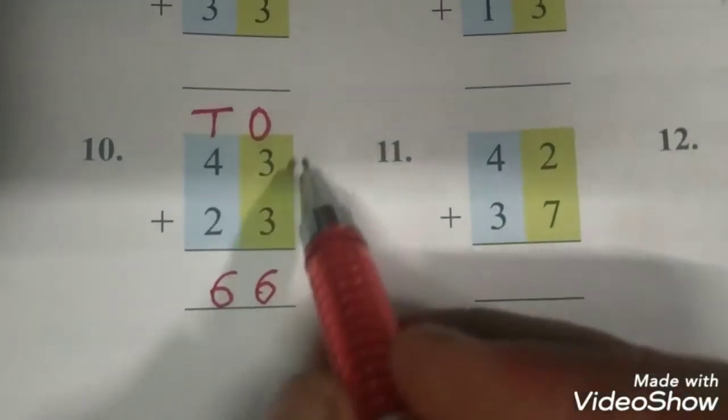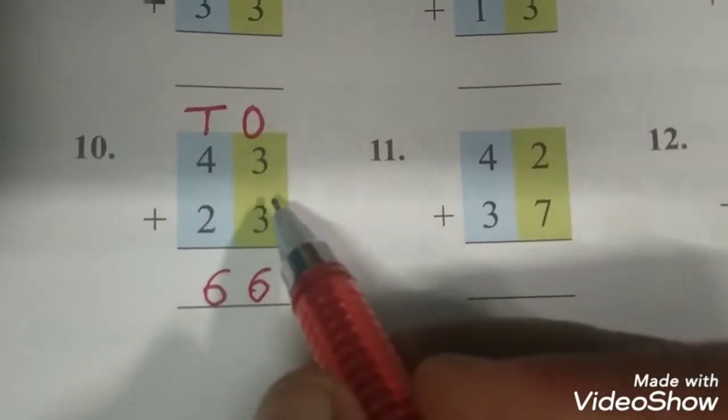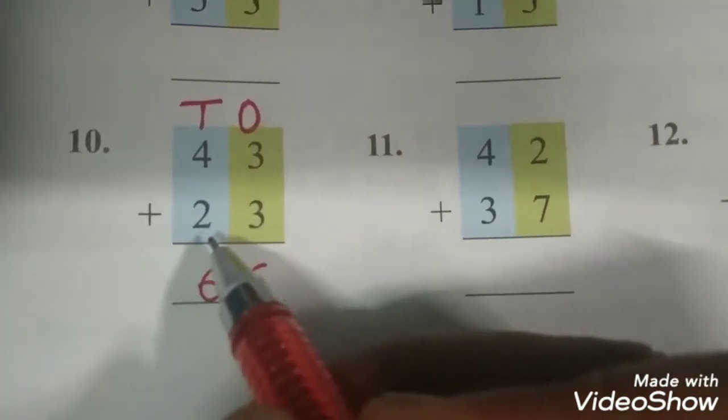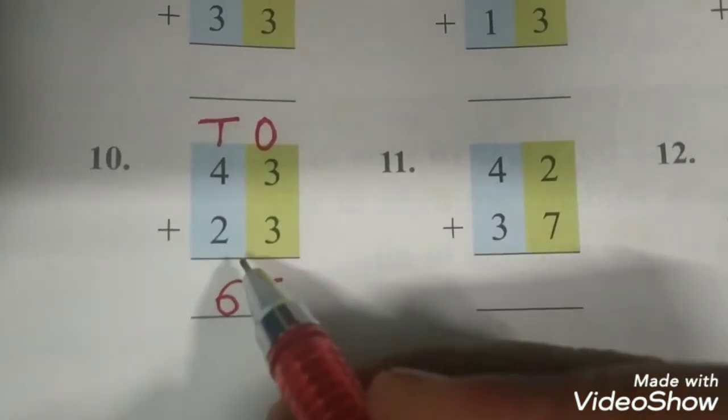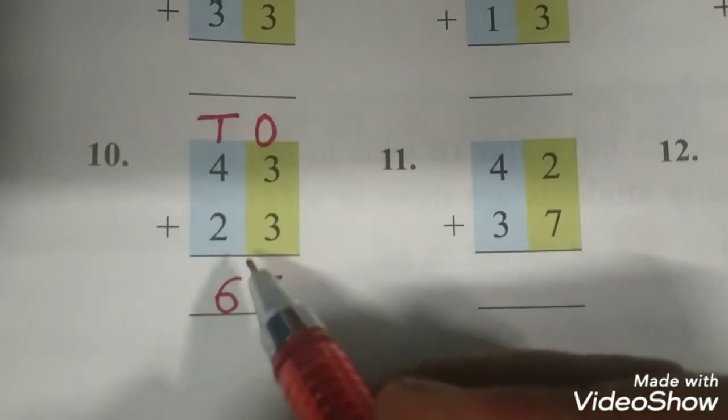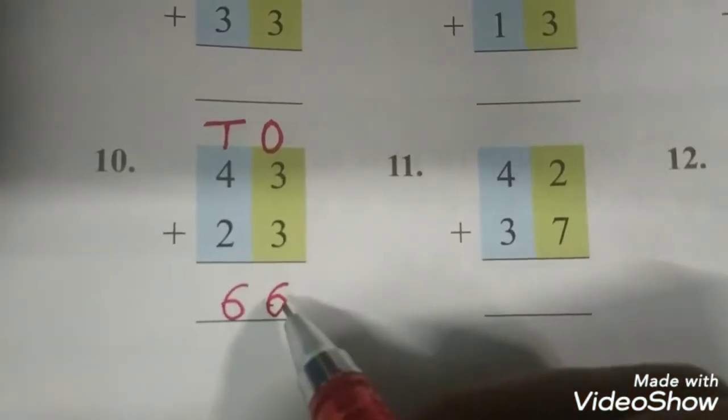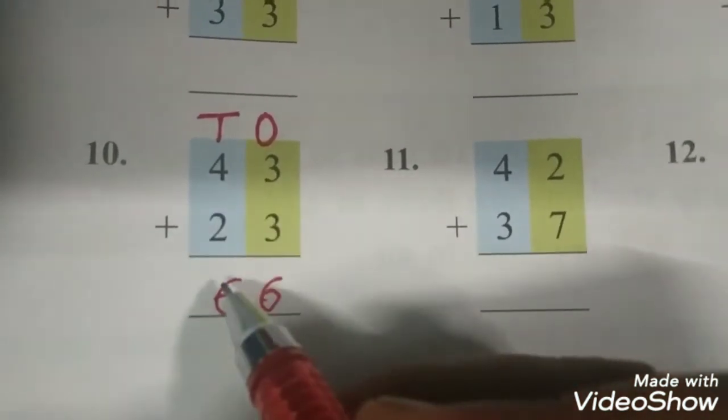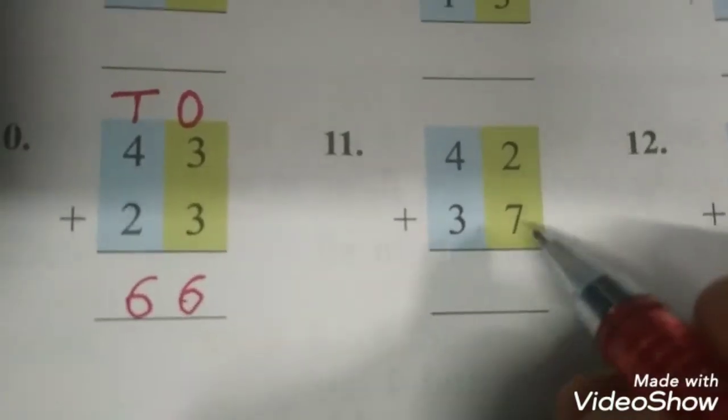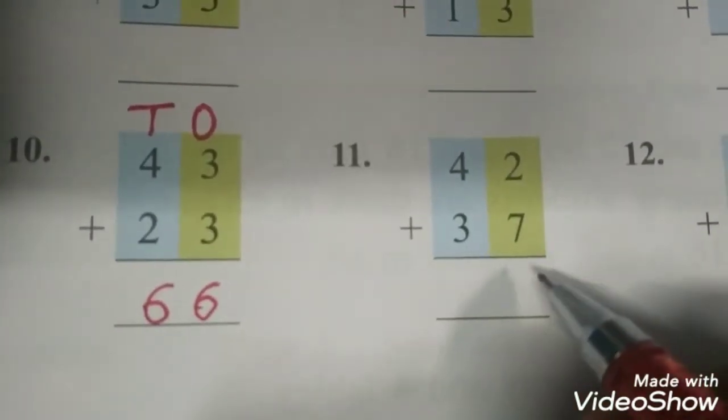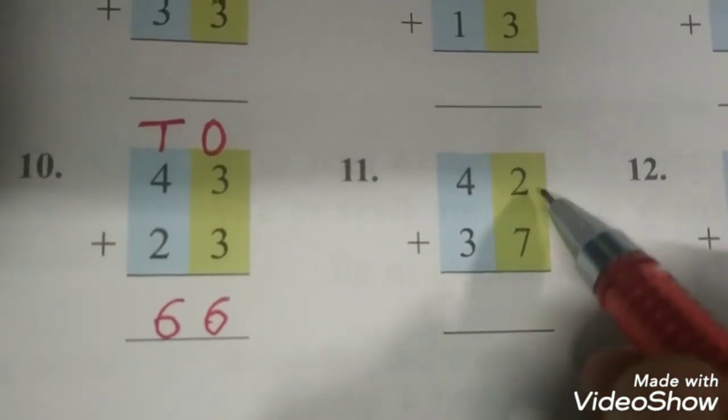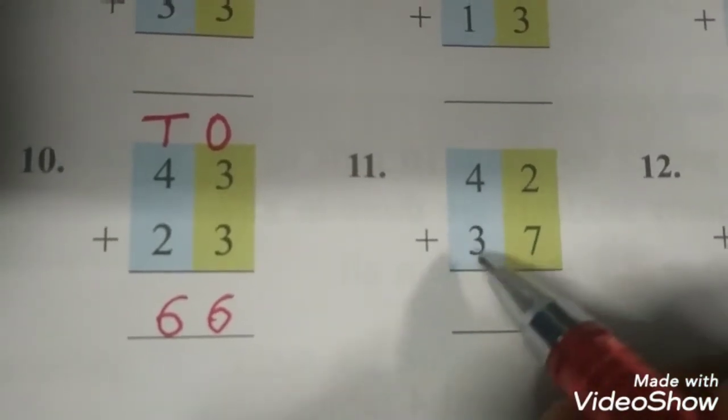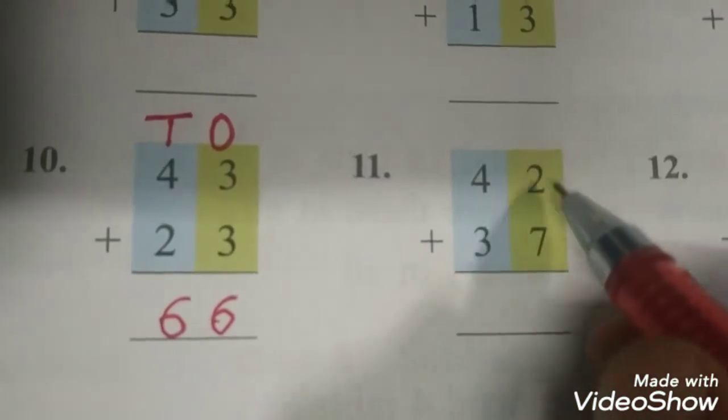Easy ho gaya na? Ab 43 aur 23 ko aap aise add karte to mushkil lag raha tha aapko, 23 objects draw karne padhte aapko. So whenever you have 2-digit numbers, you can add like this. Ek number ko upar likhi, ek number ko neeche. Ones mein ones ko aap kijiye aur tens mein tens ko. Let's solve this one also. 42 plus 37. Again we will add the ones first.